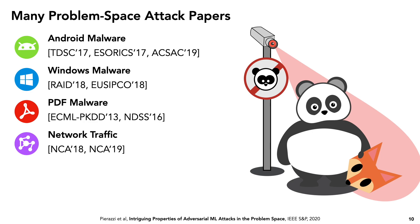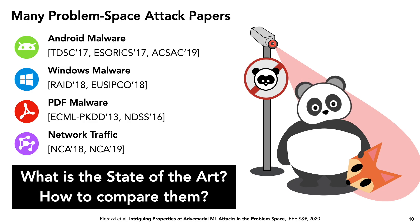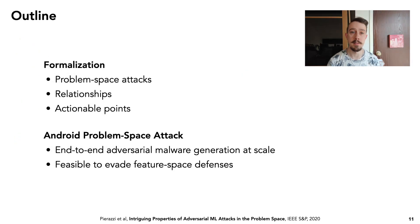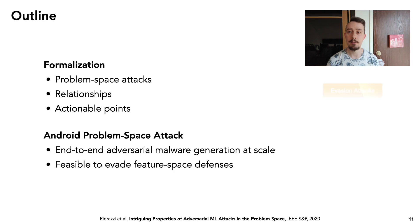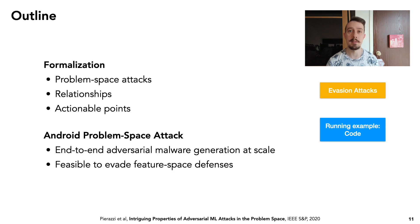Nevertheless, there have been many papers on problem space attacks across different settings, but it hasn't been clear if the problem is solved, which attack is the best, and how to compare their strengths and limitations. There are two main contributions in this work. The first is a novel formalization of problem space attacks, which allows us to design and reason about them in a principled way, highlighting relationships between the feature and problem space. Additionally, we propose a novel end-to-end adversarial malware generation approach for Android, which improves on limitations in prior work. We focus on test-time evasion attacks, using code as a running example, but we also show how this applies to multiple domains.